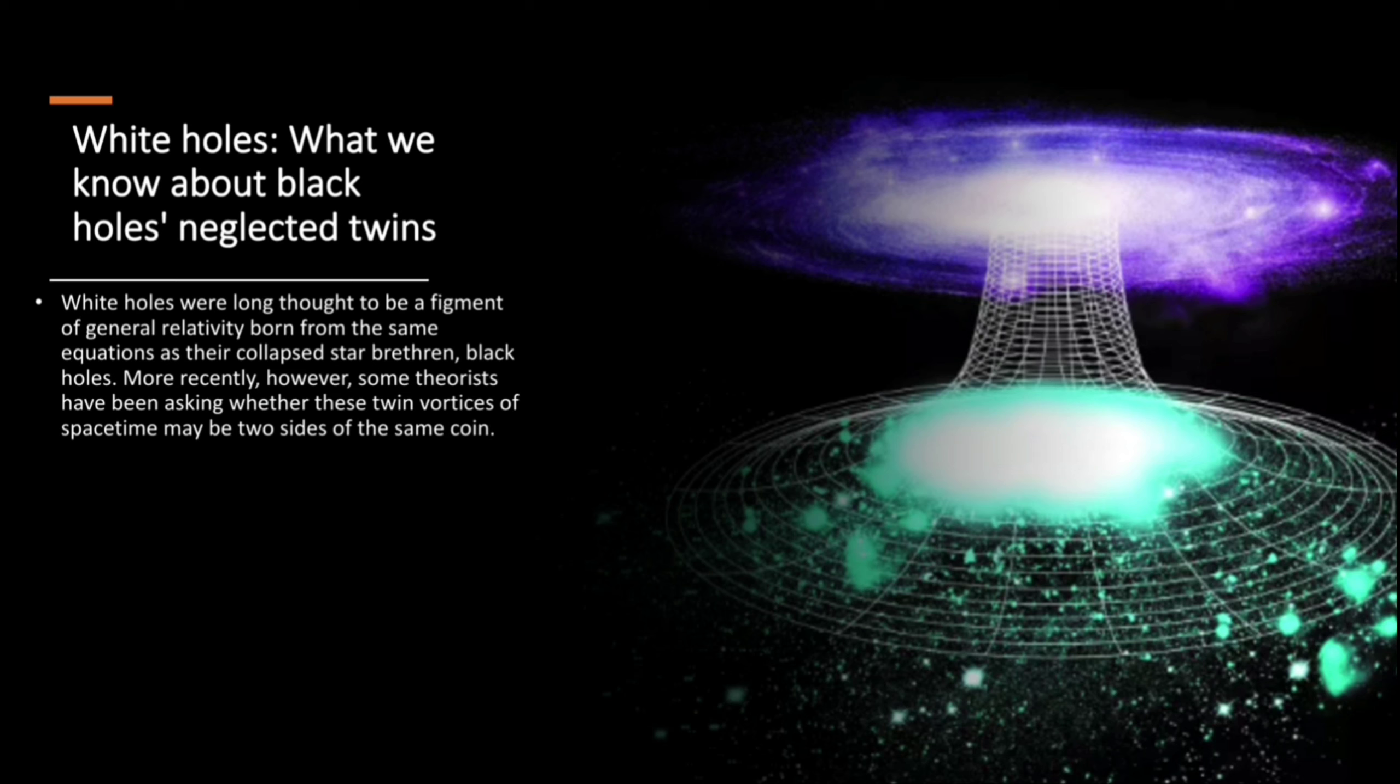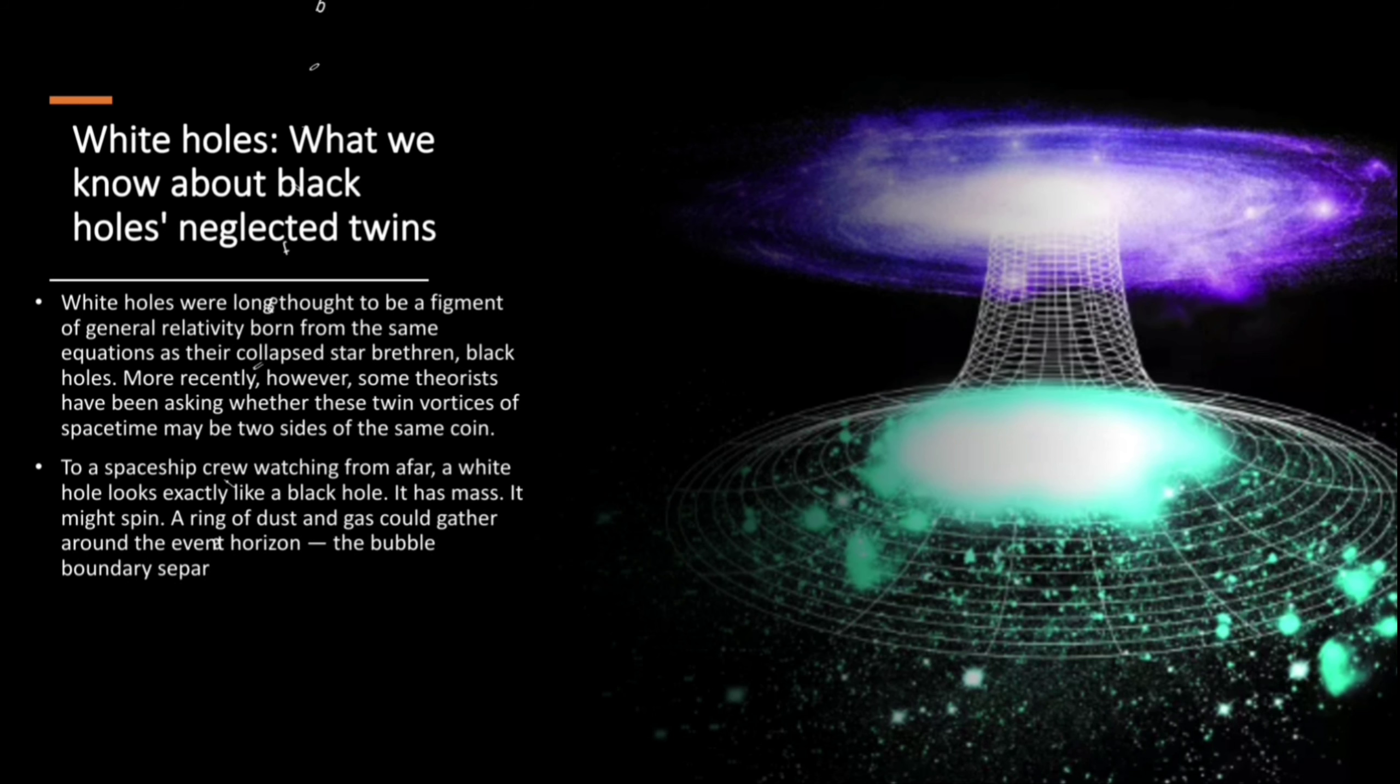To a spaceship crew watching from afar, a white hole looks exactly like a black hole. It has mass. It might spin. A ring of dust and gas could gather around the event horizon, the bubble boundary separating the object from the rest of the universe. But if they kept watching, the crew might witness an event impossible for a black hole, a belch.